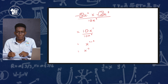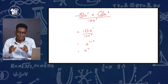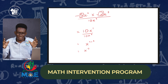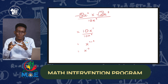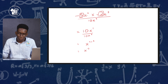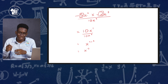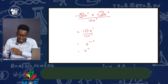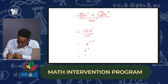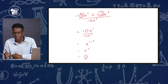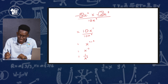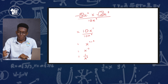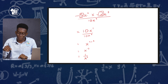But we cannot leave the answer with a negative index — that would be committing a mathematical error. We must use the negative index law to convert it: x to the negative 2 becomes 1 over x to the positive 2. So the fully simplified answer is 1 over x squared. You must always take that final step.